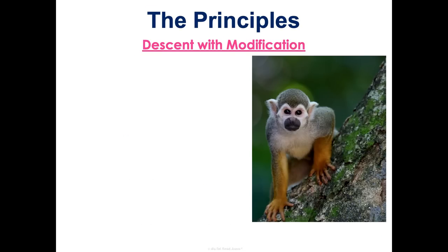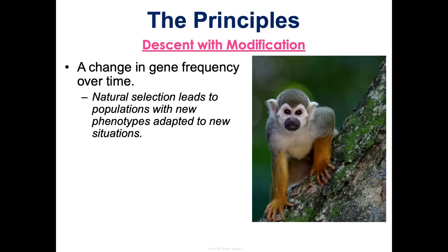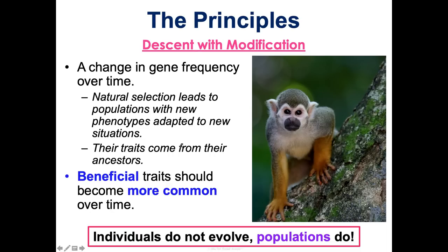Last but not least for the principles of natural selection is descent with modification — a change in gene frequency over time that leads to populations with new phenotypes adapted to new situations. Certain genes become more common over time, and they come from ancestors, so over time descendants are modified from their ancestors. Beneficial traits should become more and more common.